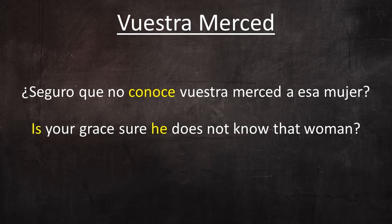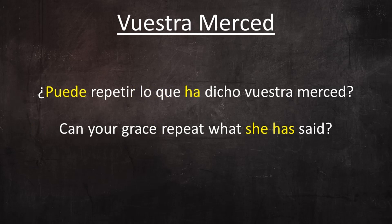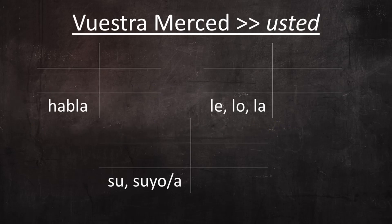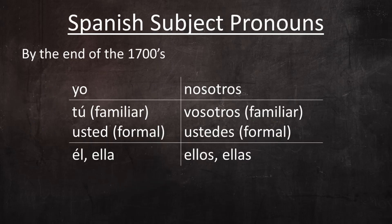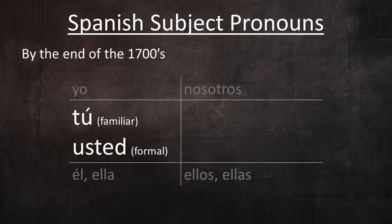¿Seguro que no conoce vuestra merced a esa mujer? — 'Is your grace sure he does not know that woman?' ¿Puede repetir lo que ha dicho vuestra merced? — 'Can your grace repeat what she has said?' As vuestra merced evolved into usted, it retained all the third-person grammar forms: verb conjugations, object pronouns, and possessive adjectives. So by the end of the 1700s in Spain, tú was used as the friendly, informal second-person form of address, and usted as the polite, formal form.